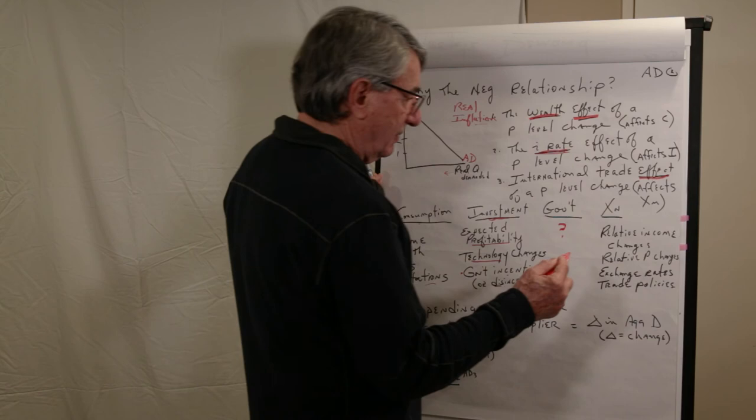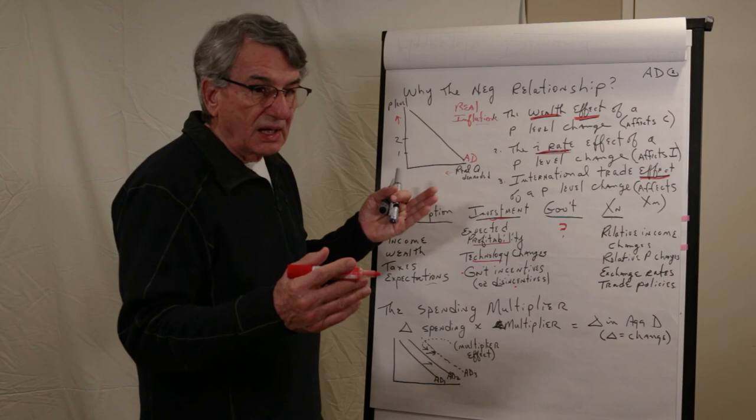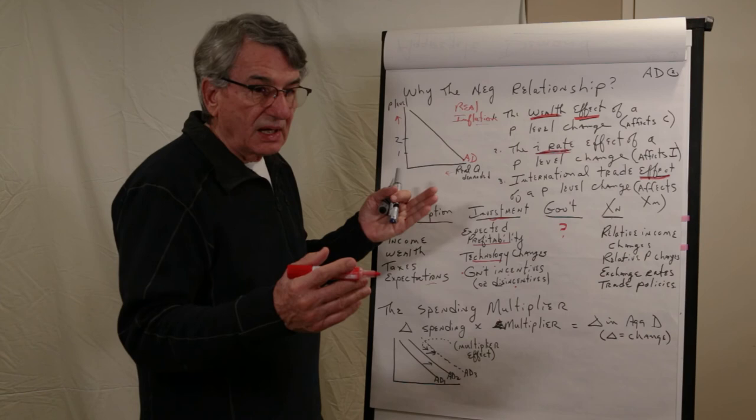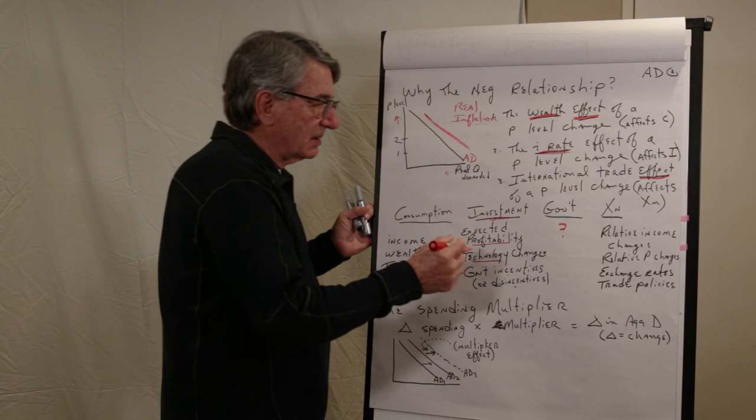Government is going to spend what it spends. You can talk to the Congress about what determines that. And finally, net exports. If, for some reason, the United States starts buying more from the rest of the world than the rest of the world starts buying from us, then, if it's not related to the price level change, it would cause a shift in aggregate demand.